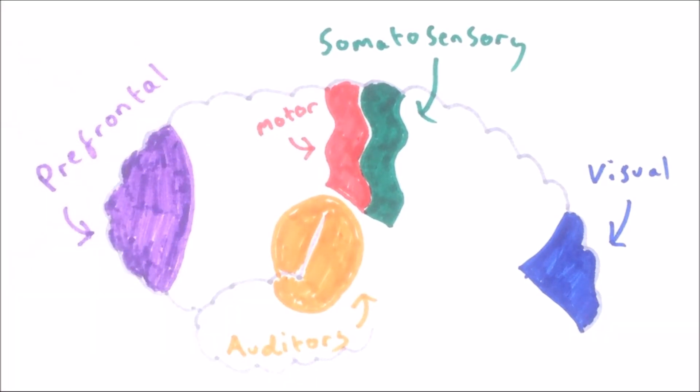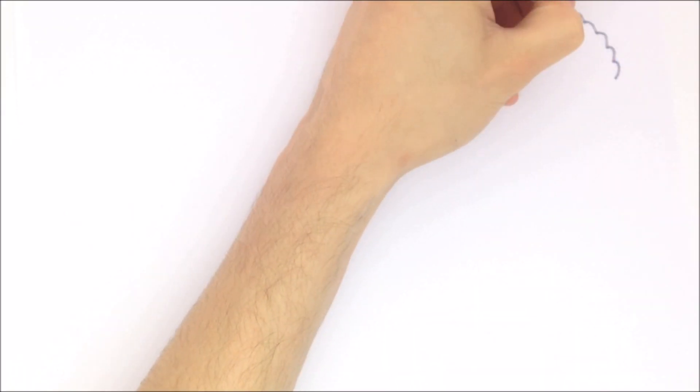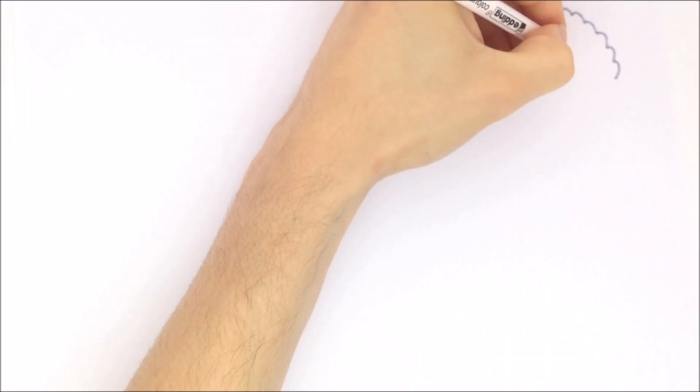The prefrontal cortex at the front of the frontal lobe is responsible for planning and decision making. However, the function of a given area of cortex is not fixed.